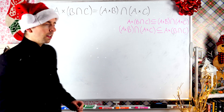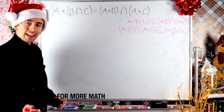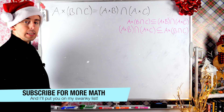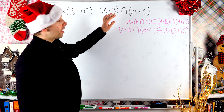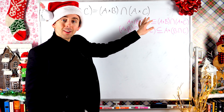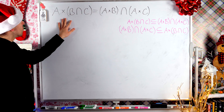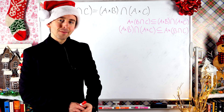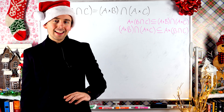Season's greetings. The Cartesian product of a set A with the intersection of two sets B and C is equal to the intersection of A cross B with A cross C. So it turns out Cartesian products distribute over set intersection. That's pretty cool. Let's prove it in today's lesson.